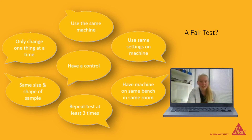And we always take at least three readings and use the average. That way, if we do make a mistake, such as not loading the sample correctly, we will notice when the result is very different to the other two.